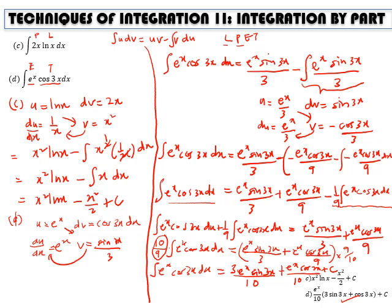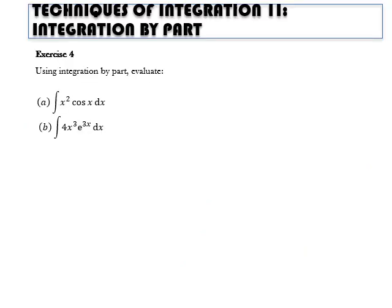That's the approach for a combination of exponential and trigonometric functions — it's a special case. You perform integration by parts twice, and when the original integral reappears on the right-hand side, you move it to the left-hand side and solve algebraically. Please do the exercises for practice.